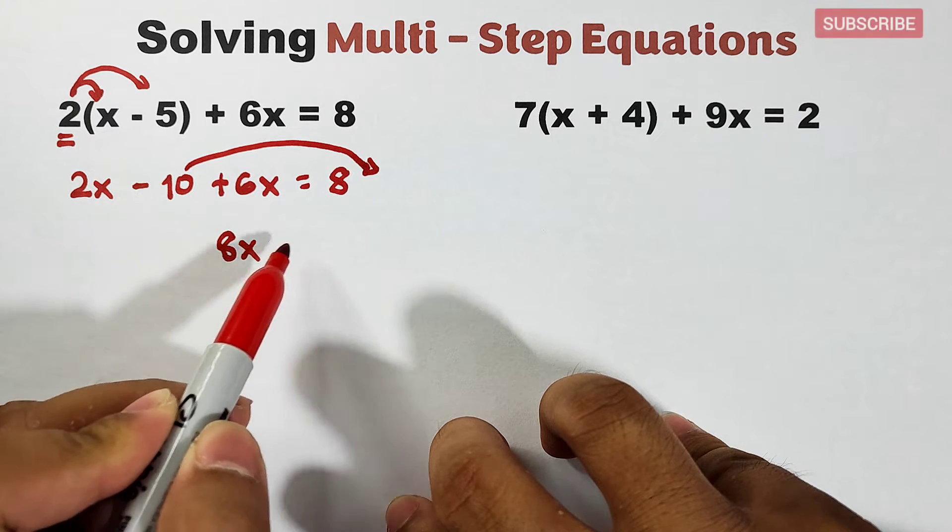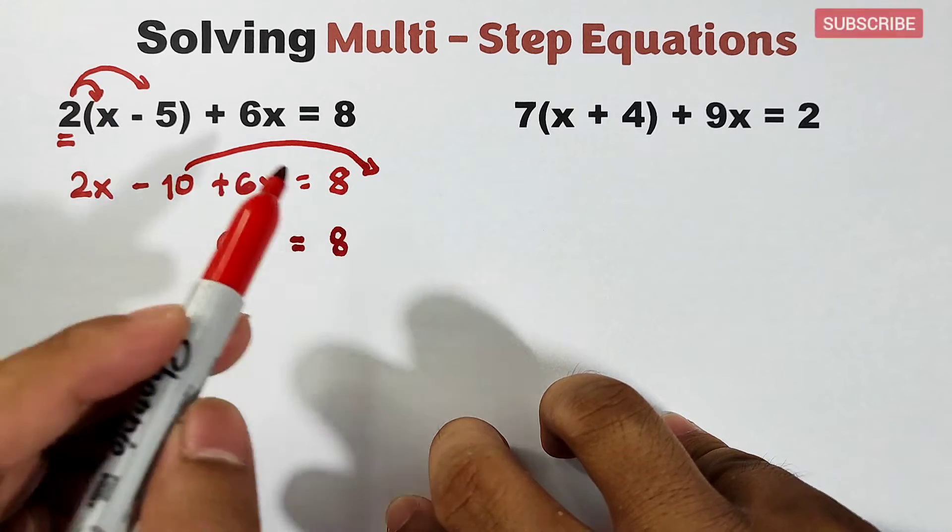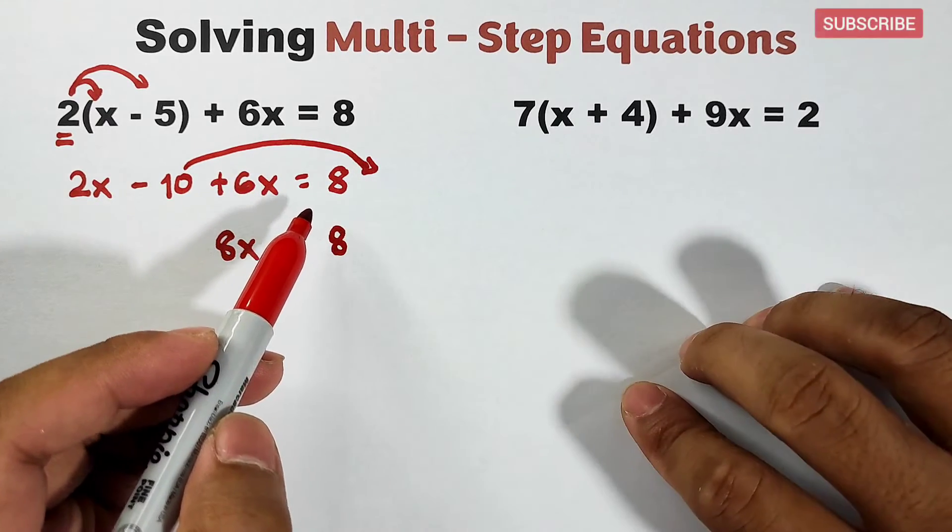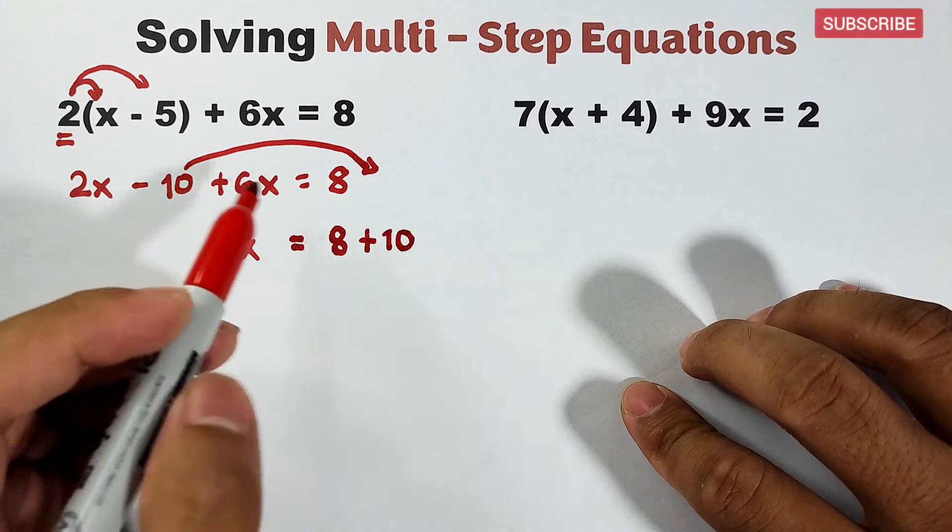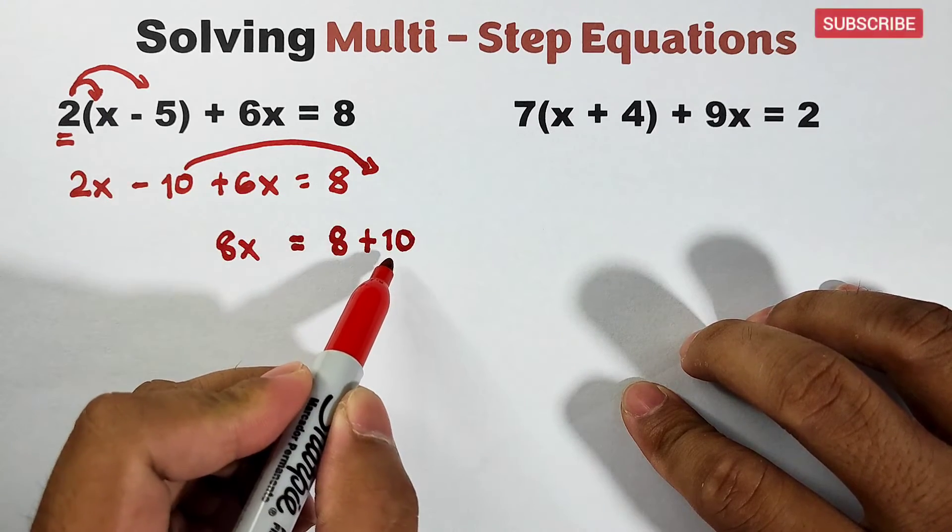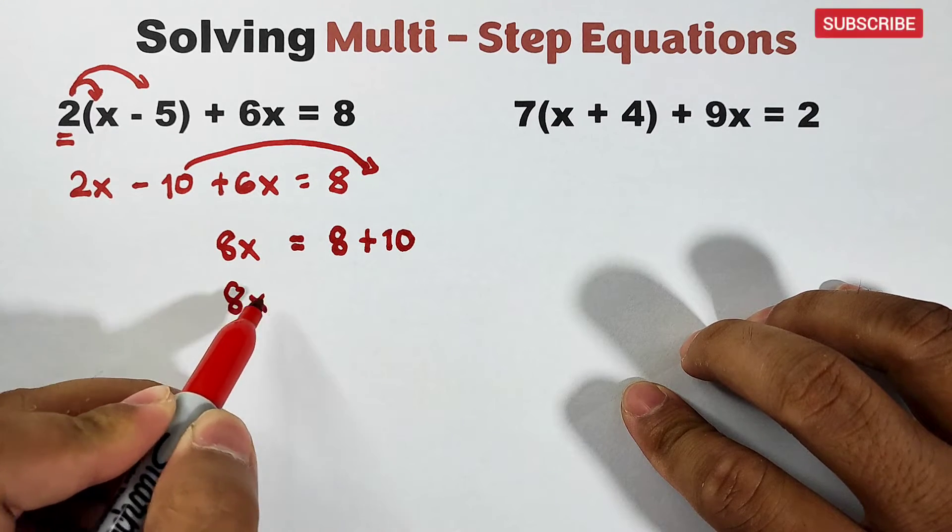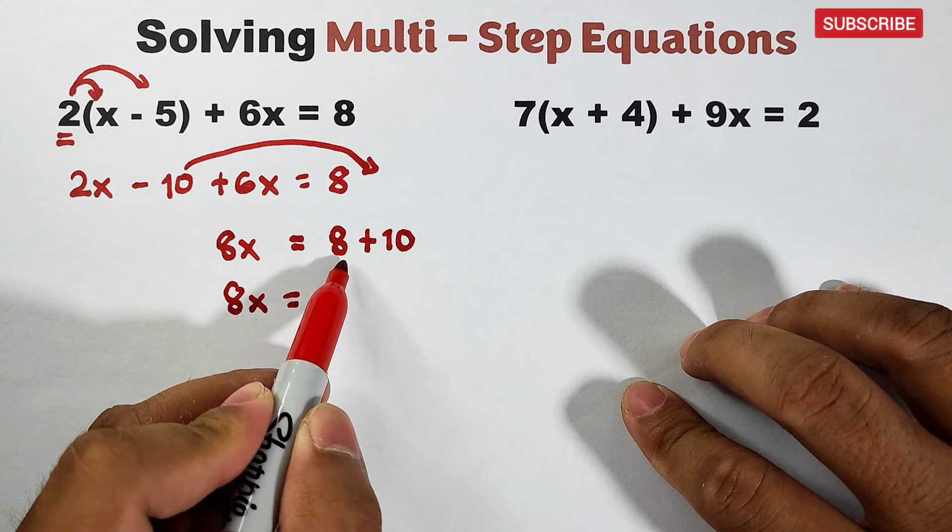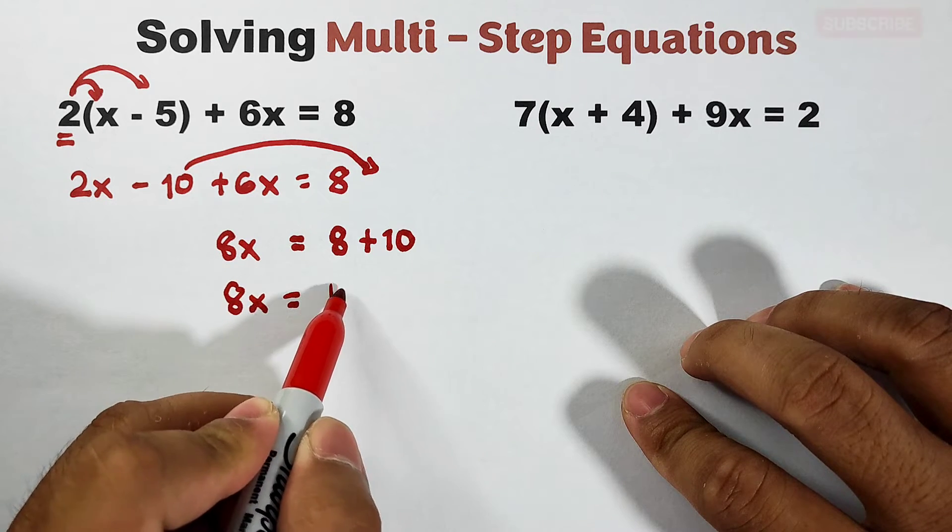So we have 2x plus 6x which is 8x, and that equals, copy your 8. Transposing negative 10, it will give you plus 10. From negative it became positive, so we have 8x equals 8 plus 10, that would be 18.